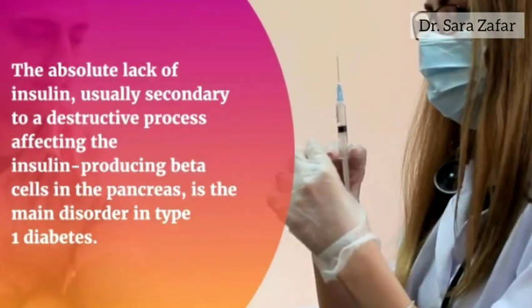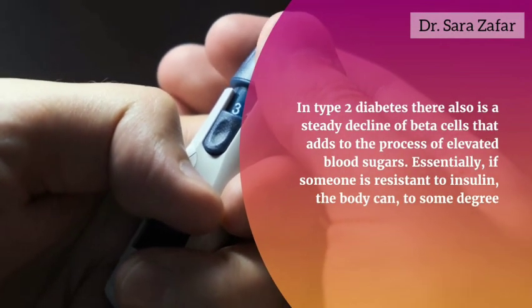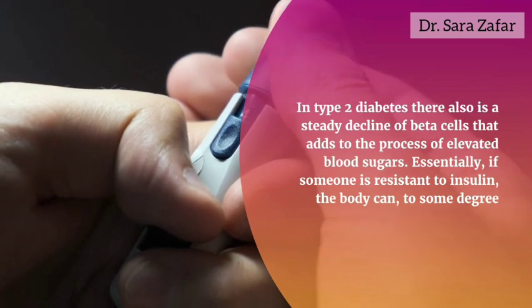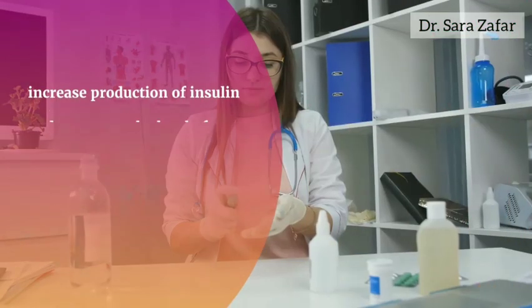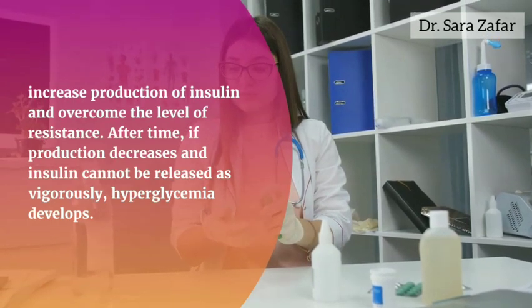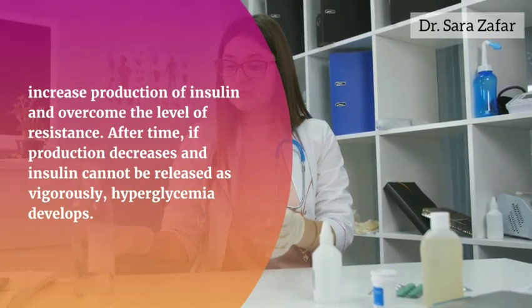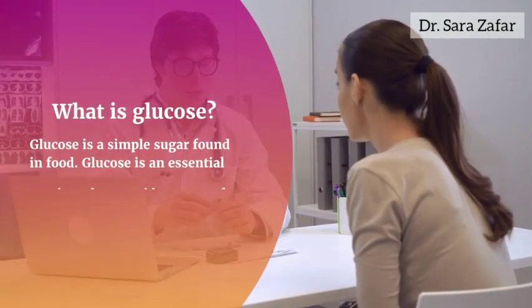Now we will talk about type 1 diabetes. An absolute lack of insulin, usually secondary to a destructive process affecting the insulin-producing beta cells in the pancreas, is the main disorder in type 1 diabetes. In type 2 diabetes, there is also a steady decline of beta cells that adds to the process of elevated blood sugars. Essentially, if someone is resistant to insulin, the body can, to some degree, increase production of insulin and overcome the level of resistance. If production decreases and insulin cannot be released, then hyperglycemia develops.